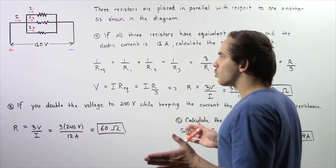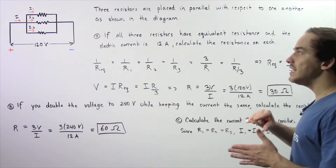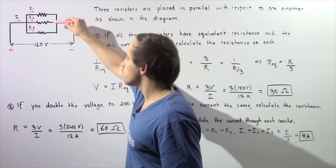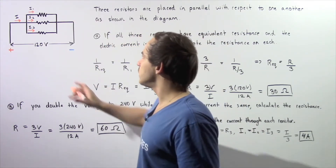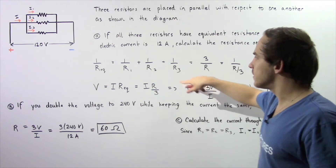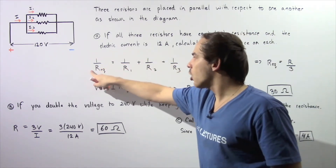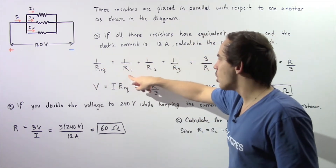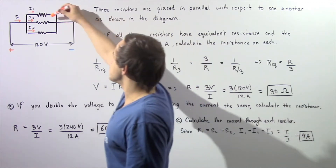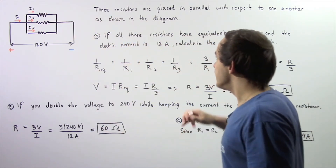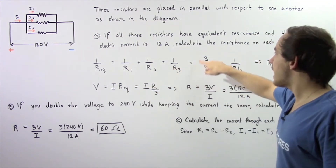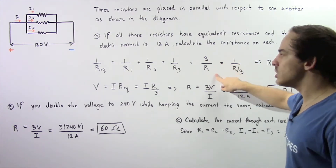Let's begin by recalling the equation that gives us the equivalent resistance of that single resistor that will replace all three resistors placed in parallel as shown in the following diagram. That equation is given by the following formula: one divided by R equivalent is equal to one divided by R1 plus one divided by R2 plus one divided by R3. Now, by assumption, R1 is equal to R2 is equal to R3, and that gives us the result three divided by R.